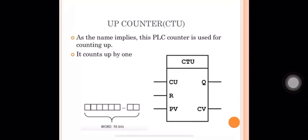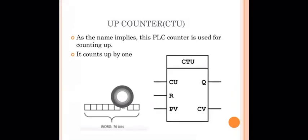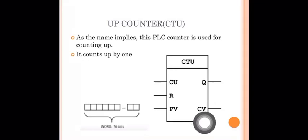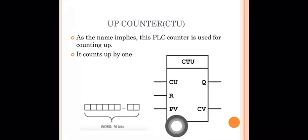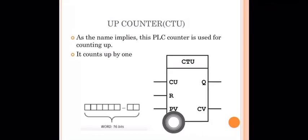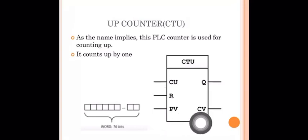We have an input signal from the sensor. The PV, or preset value, is the limit. For example, if we want to count 25 products, the preset value PV is set to 25. The output Q is set when the condition is met.